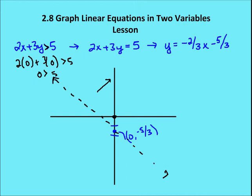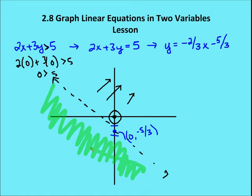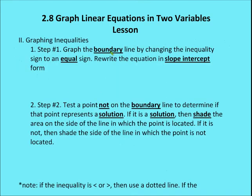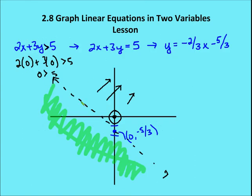Since (0, 0) is not part of the solution, we shade the other side of the line. That shaded region represents our solution. To recap: Step 1 — graph the boundary line in slope-intercept form; use a solid line for greater than or equal to / less than or equal to, and a dashed line for strictly greater than or less than. Step 2 — test a point not on the line, typically (0, 0). If it's not a solution, shade the opposite side.